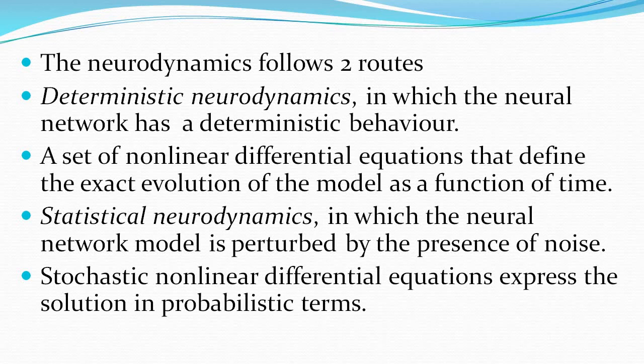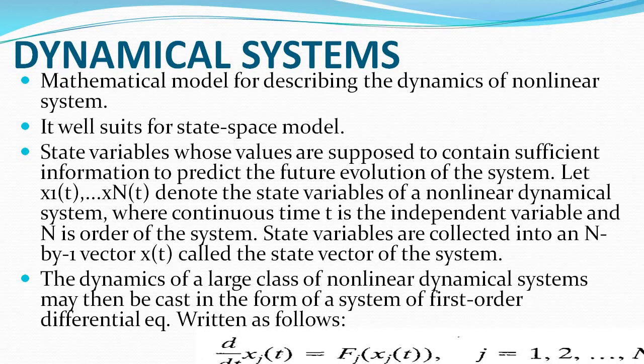These are the two routes of neurodynamics. Now we will look at the mathematical model or state-space representation of the dynamics of a non-linear system. In the state-space model, state variables are used whose values contain the information needed to predict the future evolution of the system.